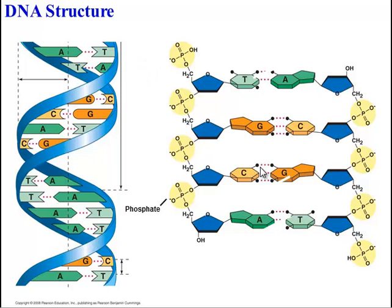First of all, there's the phosphate. There's the sugar, which in DNA is deoxyribose. That's where the D comes from. And then we can see the nitrogenous bases.